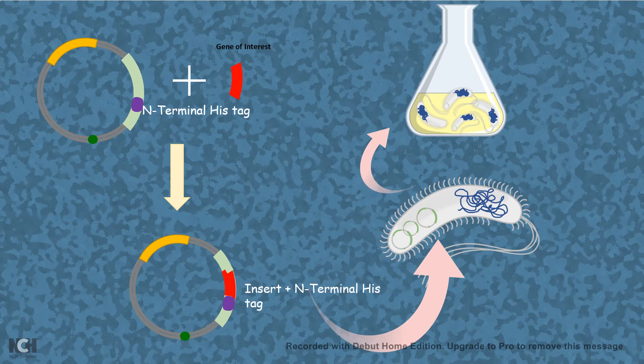Instead of this histidine tag there could be other tags such as flag tags, myc tags or sometimes also GST tags. So there are various types of tags but the principle is very simple. You retain your analyte molecule with the help of these tags because something is specifically binding with high affinity with this tag.